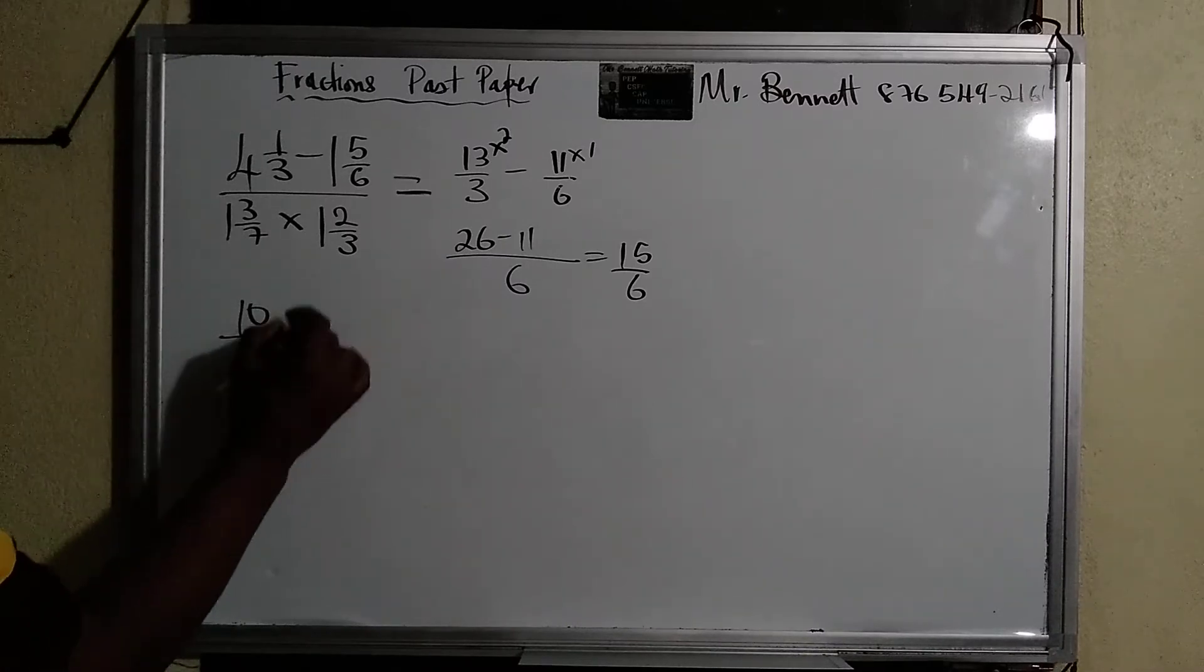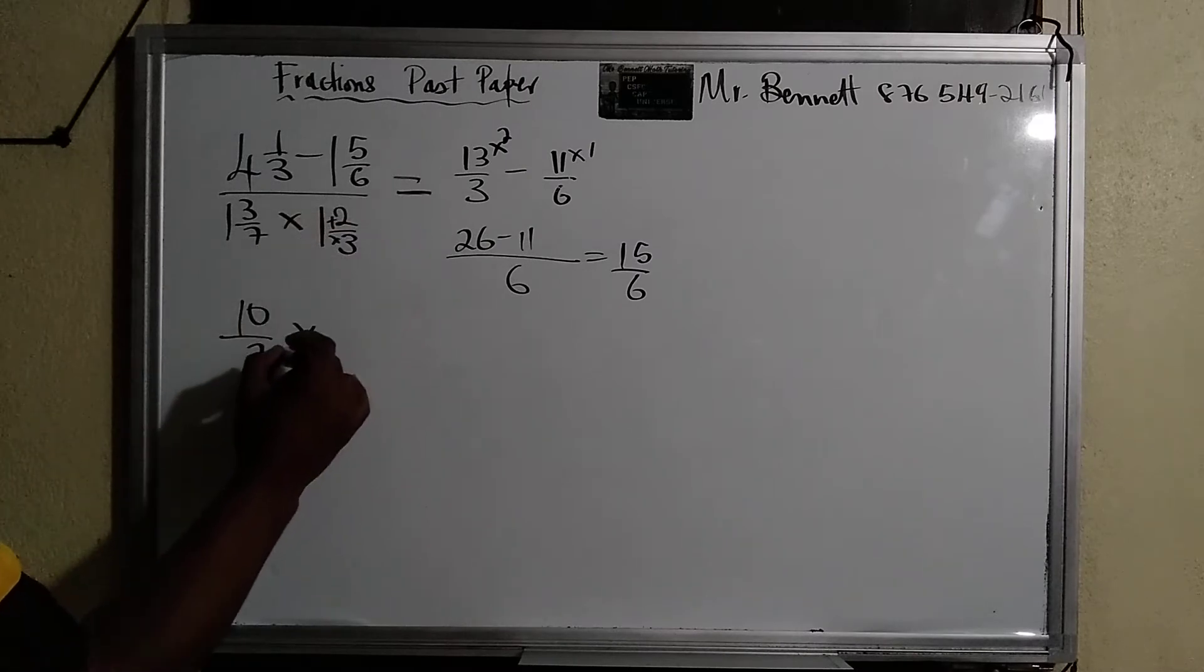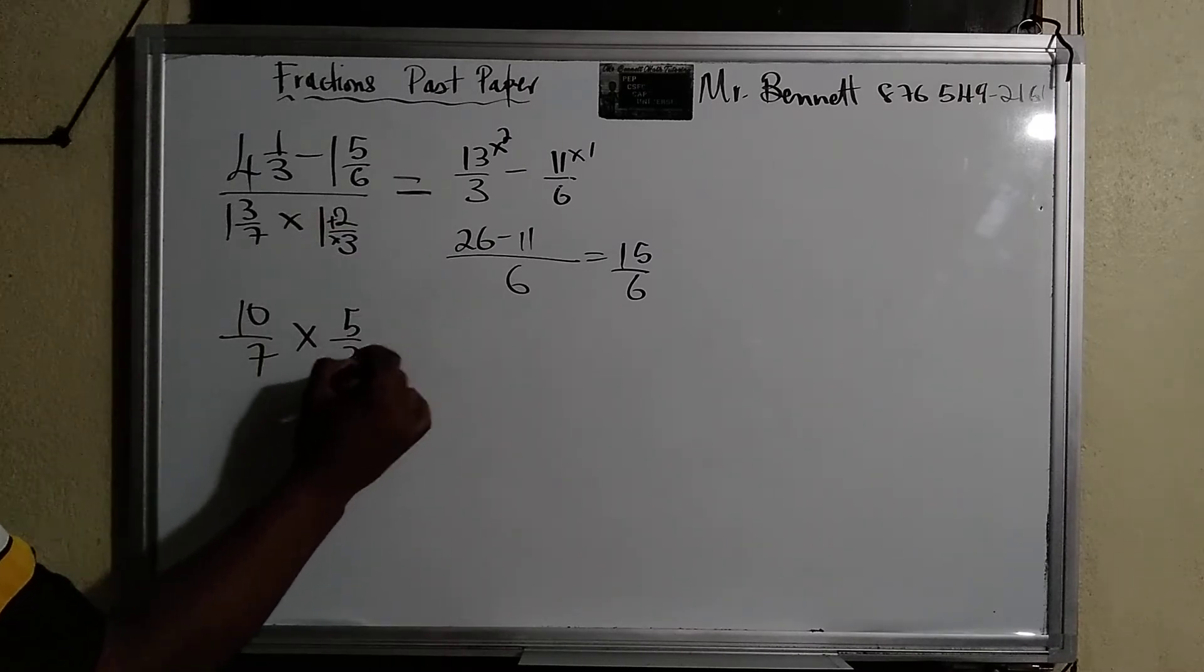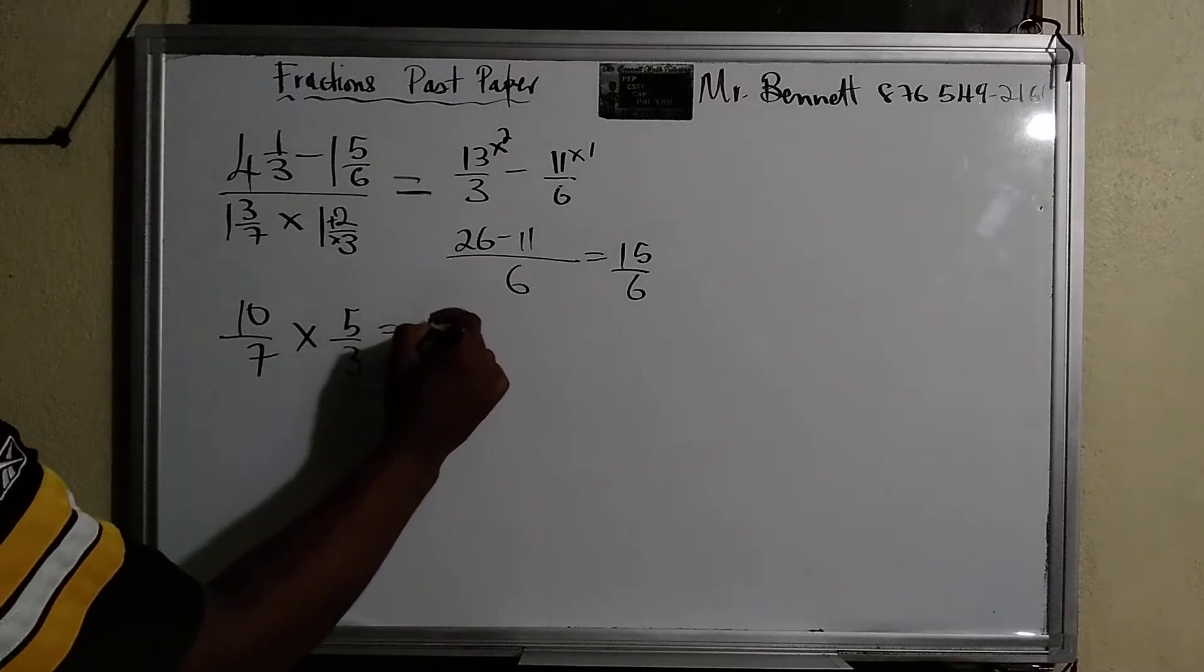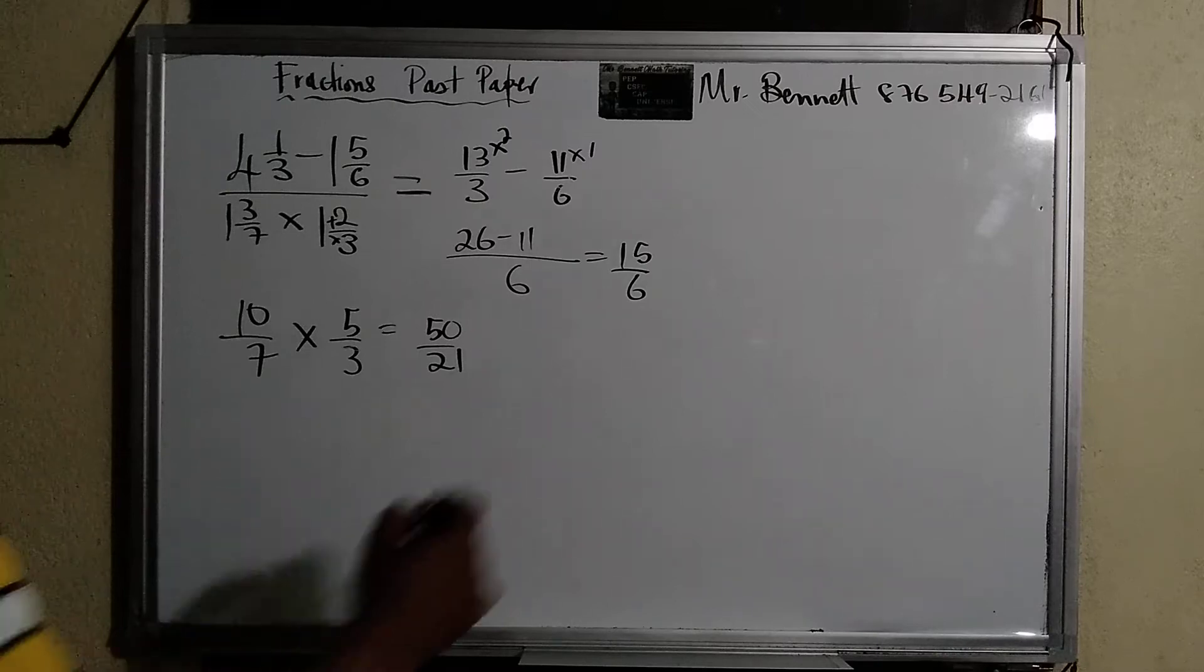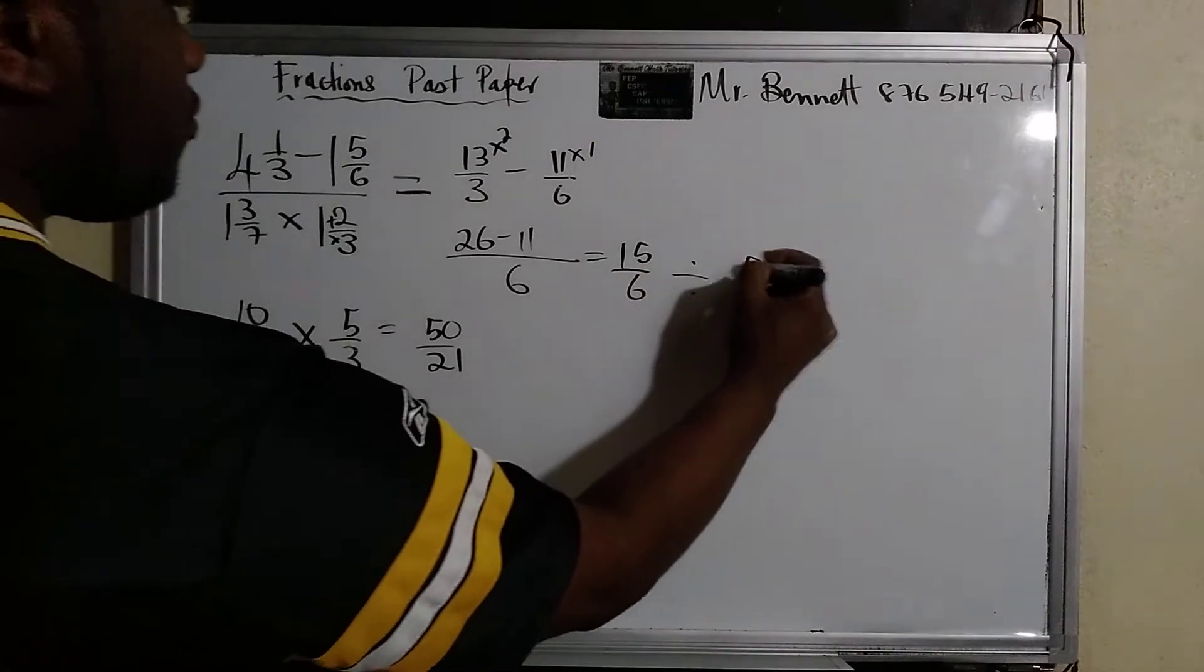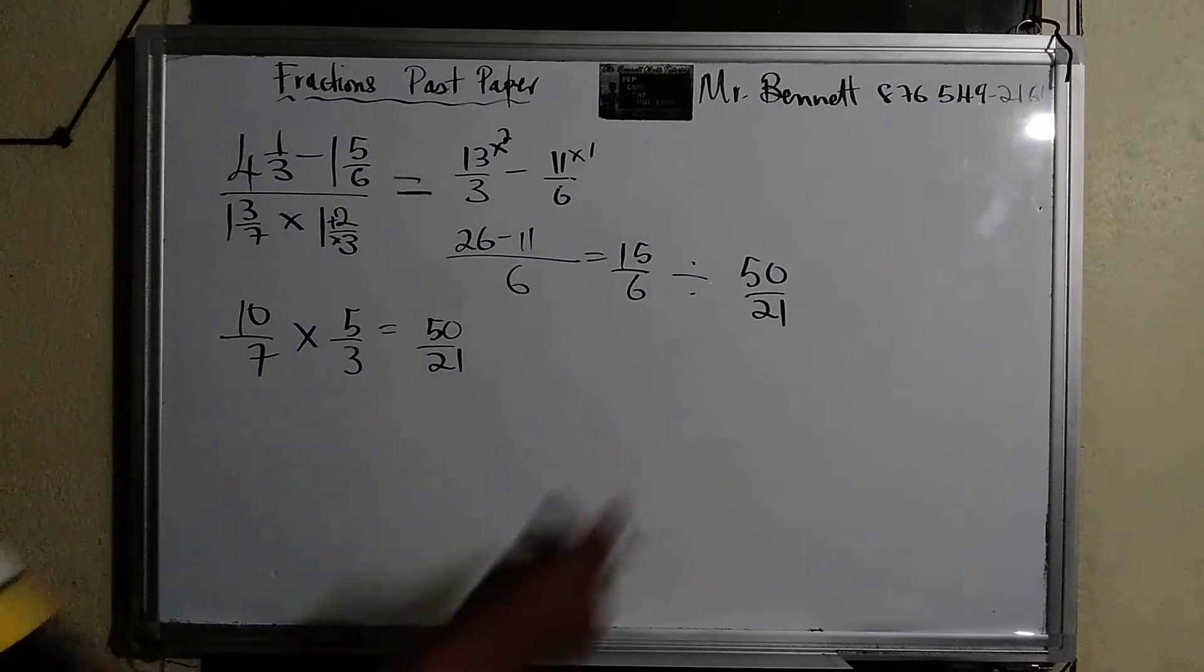So let's work here, multiplication part. One times seven is seven plus three, that's ten over seven, times one, three, three plus two, that's five over three. We can cancel, so let's say five, ten times that is fifteen.